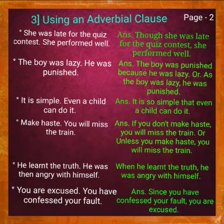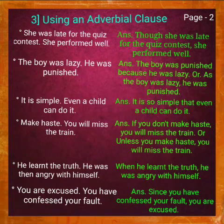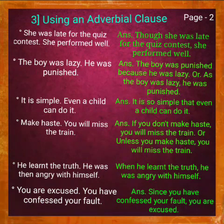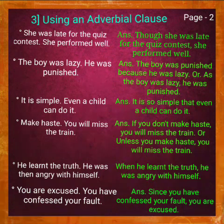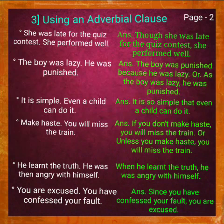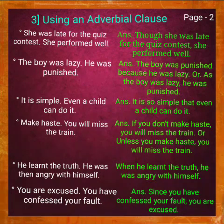Next example — 'It is simple' and 'Even a child can do it.' If I join them into a complex sentence using an adverbial clause, the answer will be: 'It is so simple that even a child can do it.' Here, 'it is so simple' is the independent clause and 'that even a child can do it' is the adverbial clause. Together it forms a complex sentence.